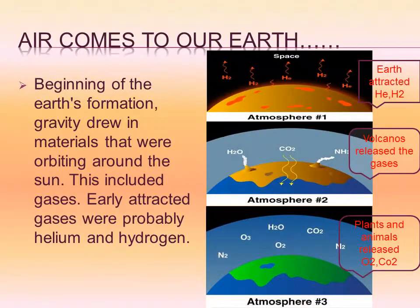Did you know how air came to Earth? At the beginning of Earth's formation, gravity drew in the materials that were orbiting around the Sun — these included gases. The gases probably attracted were Helium and Hydrogen.